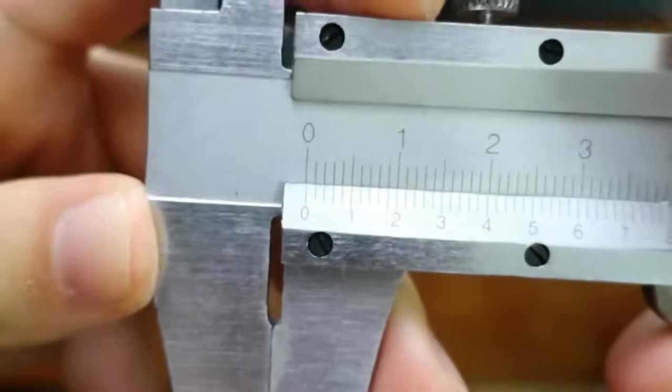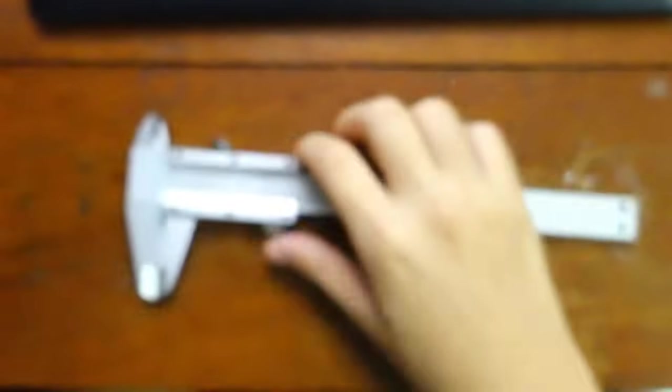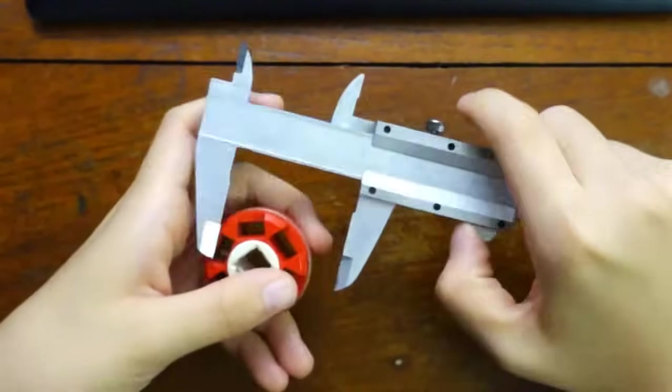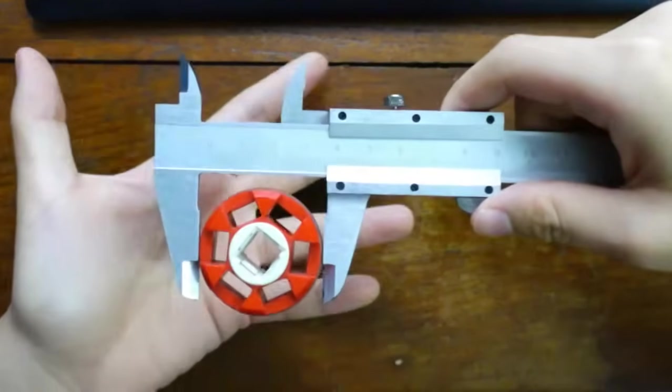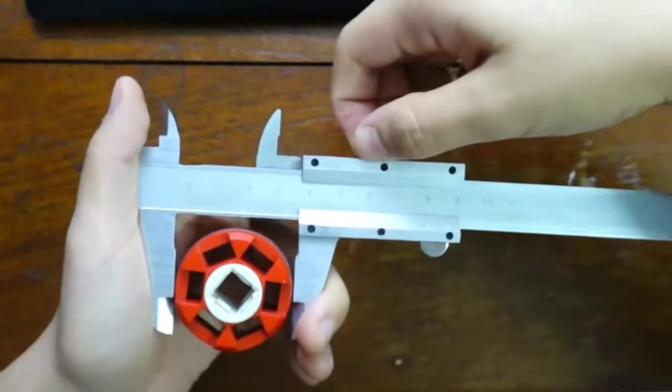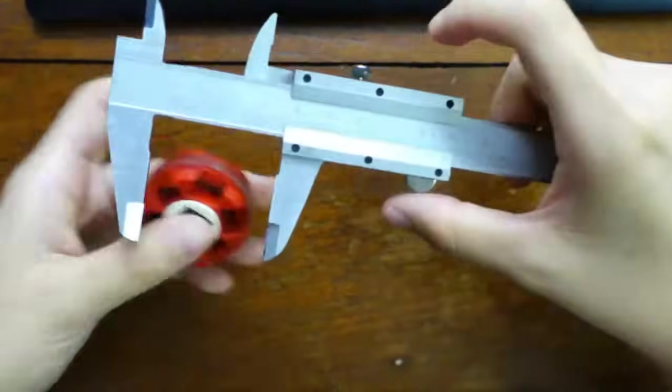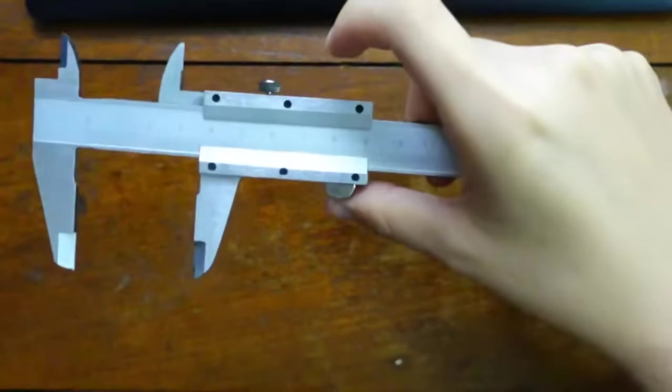Check your vernier. Vernier scale usually are okay. Okay, check for 0 error first. Write down the 0 error in your lab notebook because you can minus off the values later. So first, you kiap your tyre. Lock it so that your readings are locked. Then, you know, the tyre can fall off. That's fine.